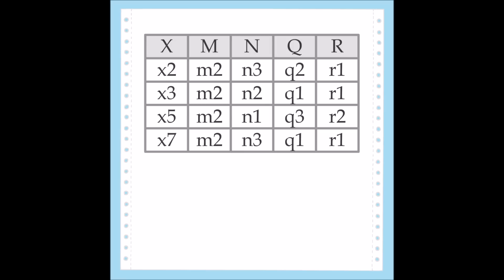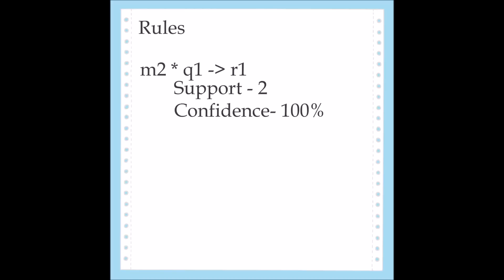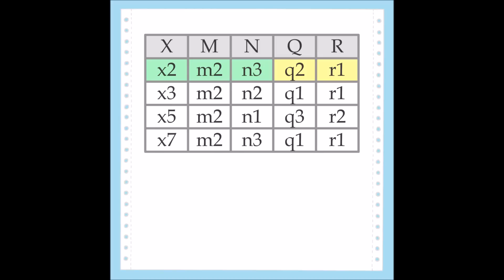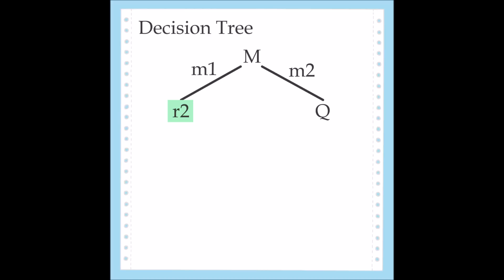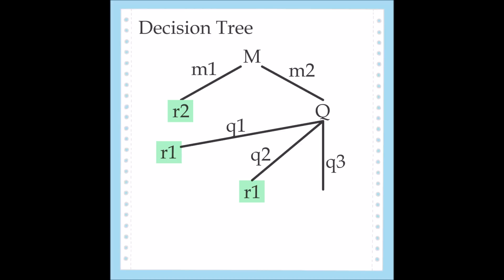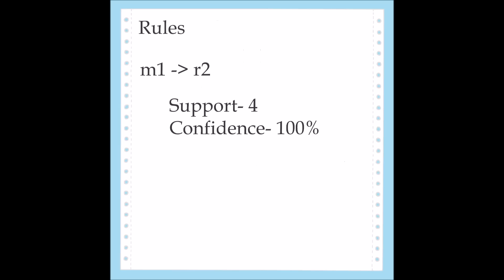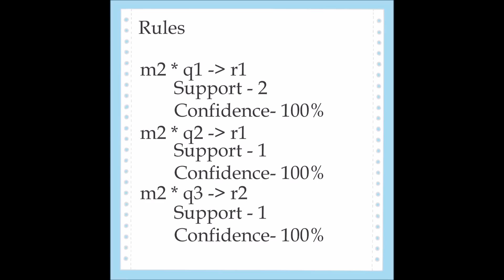We use exactly the same procedure to generate the tree and rules when we split on Q. I'm going to speed up when doing the steps for Q — you may want to pause the video here and generate the tree and rules yourself. Here is the completed tree with M as the first splitting attribute and Q as the second splitting attribute, and these are the rules generated with splits on M and on Q.